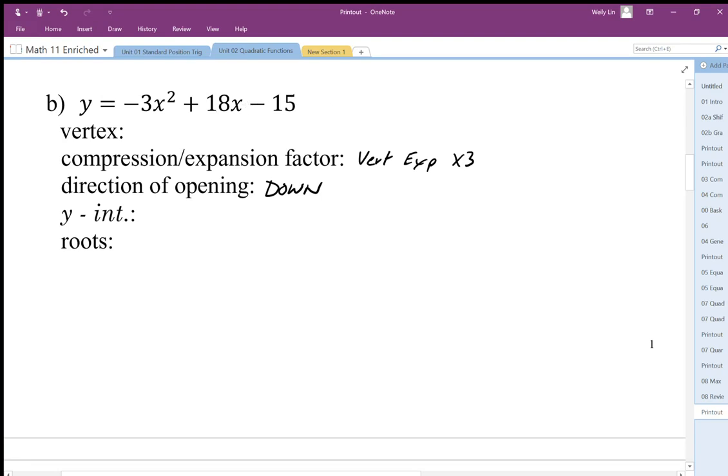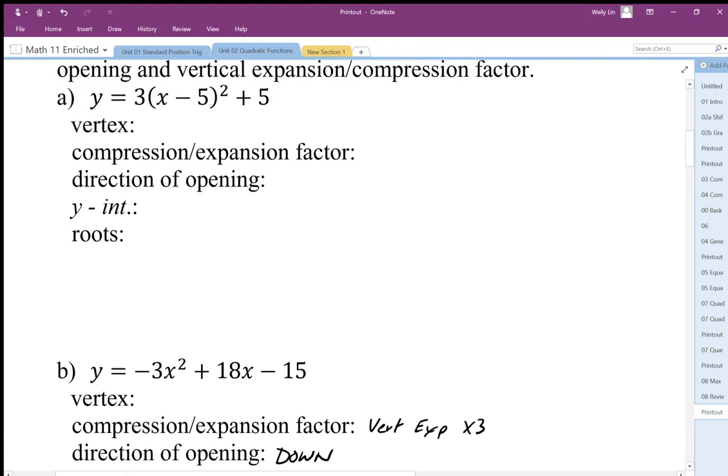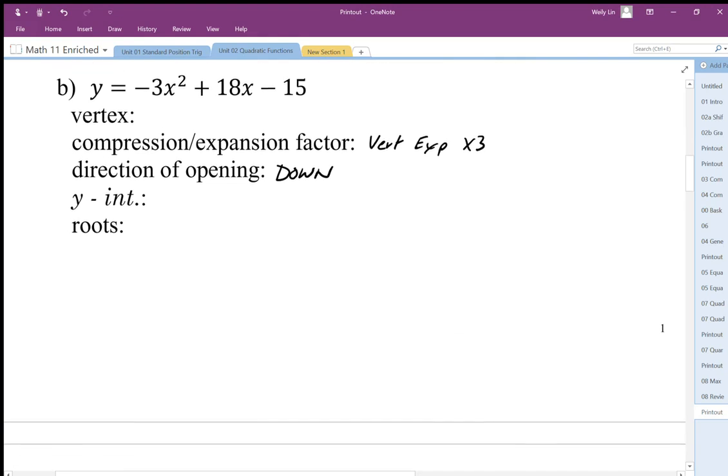We can always double check by substituting in x = 0. Yeah, that's going to equal negative 15. Now the y-intercept only comes from the general form. We don't ever use the y-intercept from the graphing form - that doesn't work. We'd have to substitute 0 in for those ones.